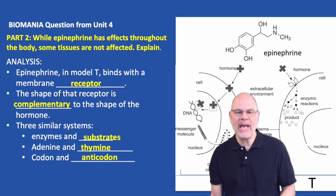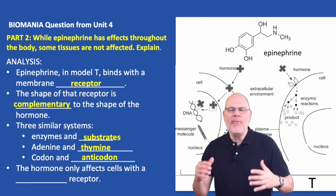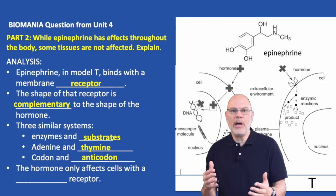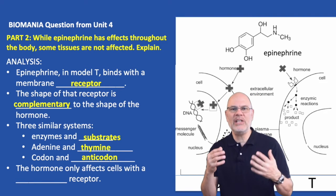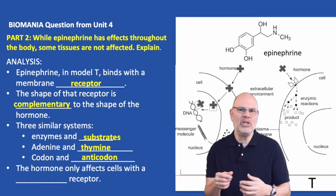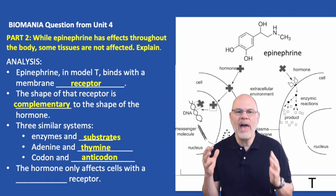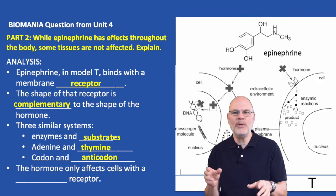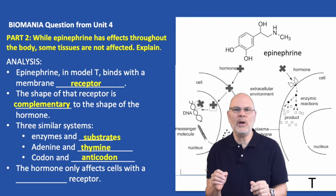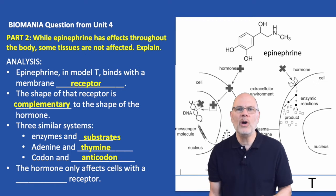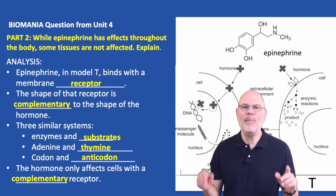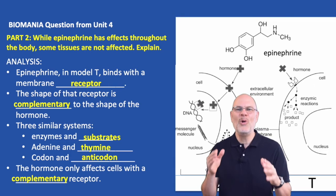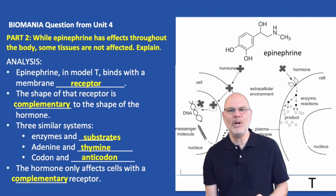To pull this all together — that hormone, epinephrine, does indeed go throughout the body. Hormones are released in glands, they go into the bloodstream, and they go everywhere. But they only affect cells with a complementary receptor. They're only going to affect cells with a complementary receptor.